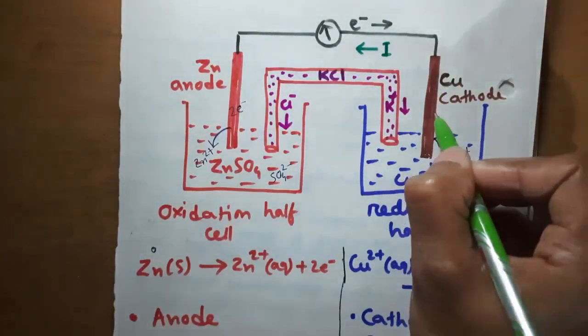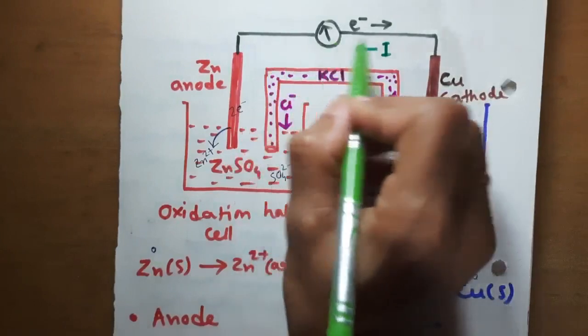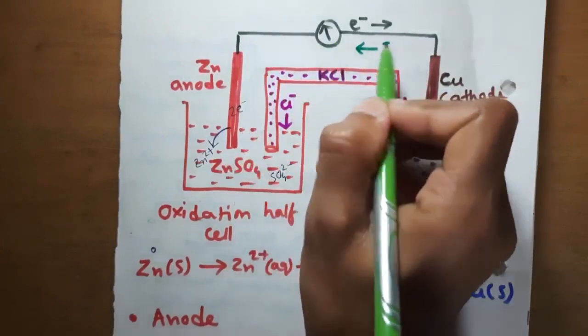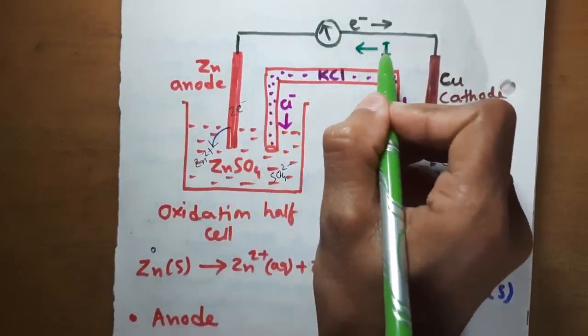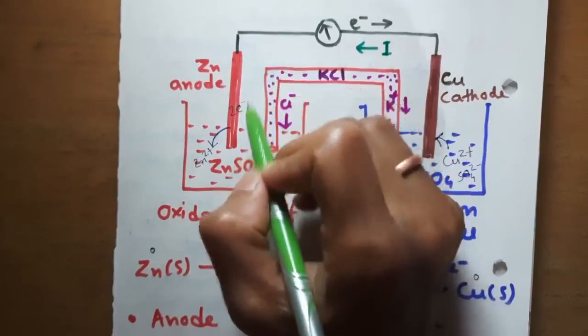Since electrons are moving from left to right in this cell, the conventional current must flow from right to left in this cell.